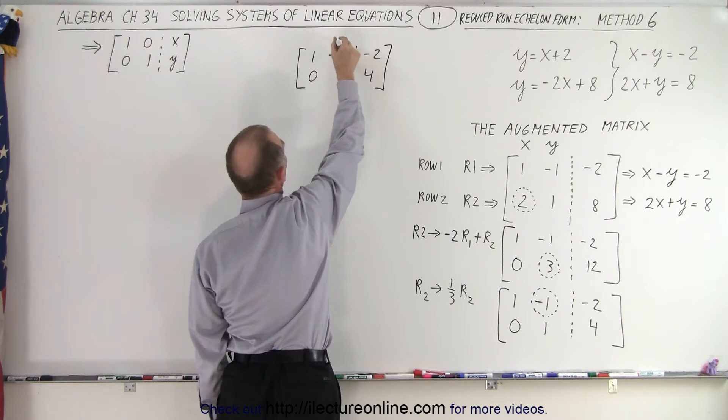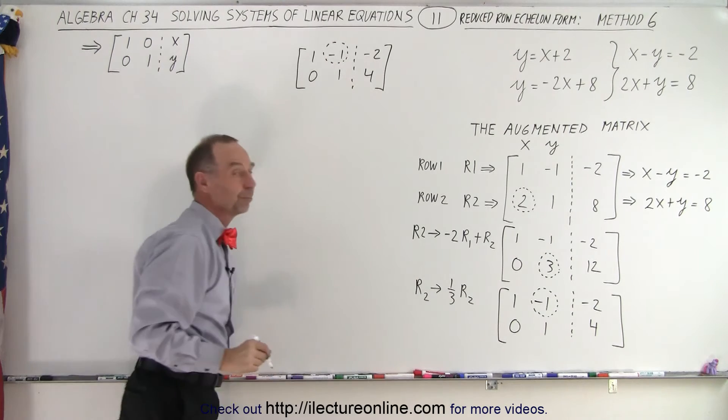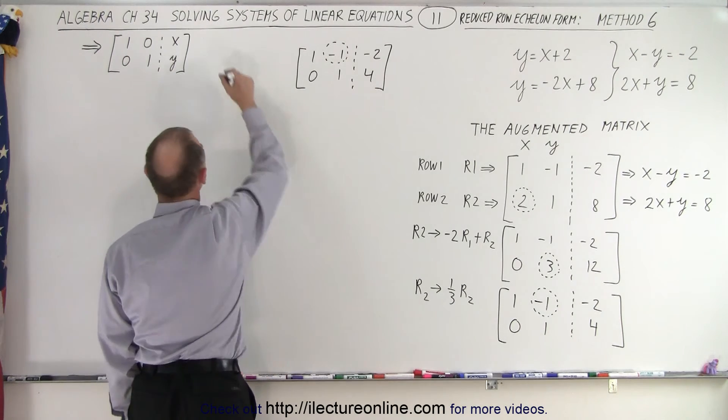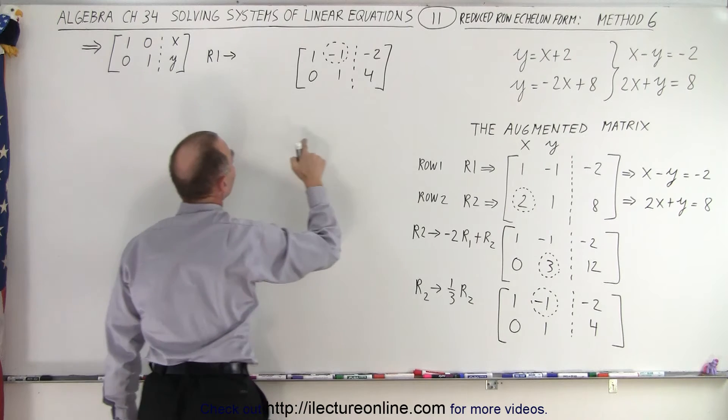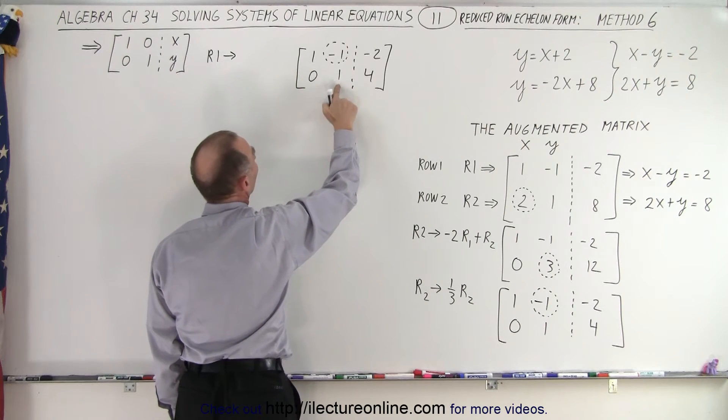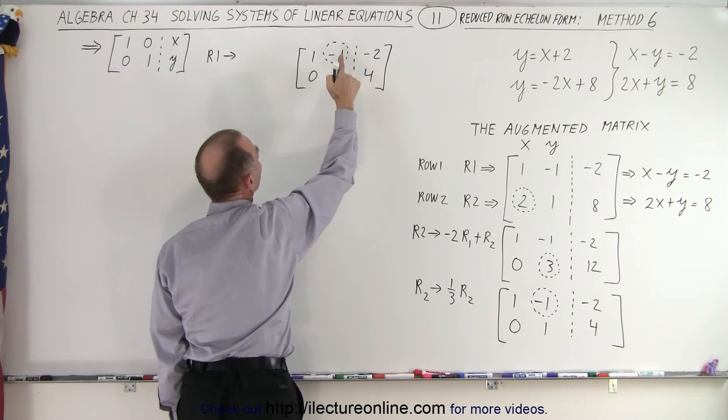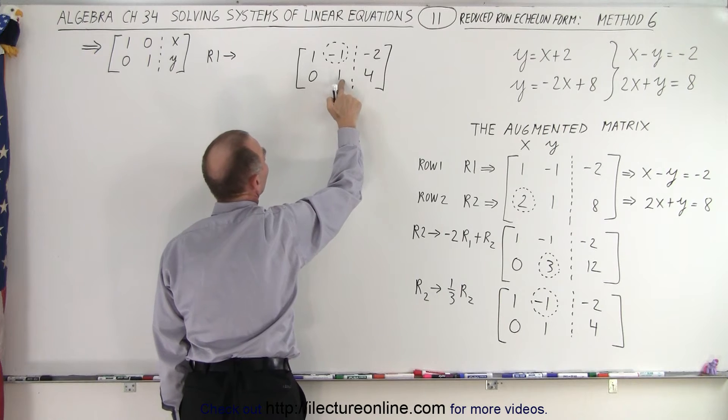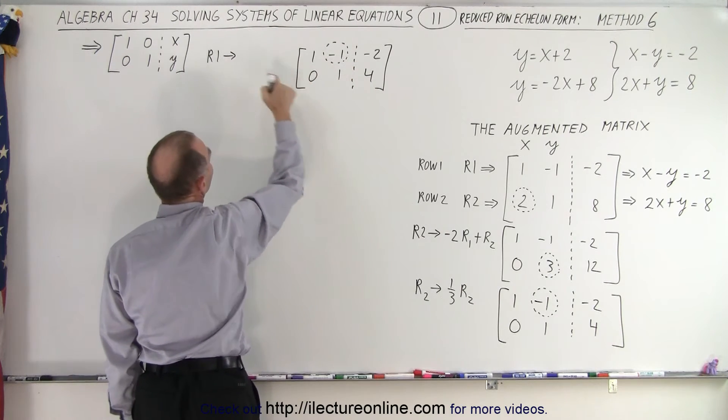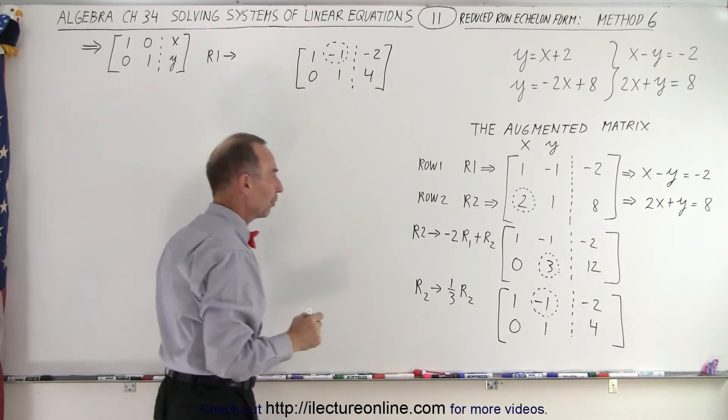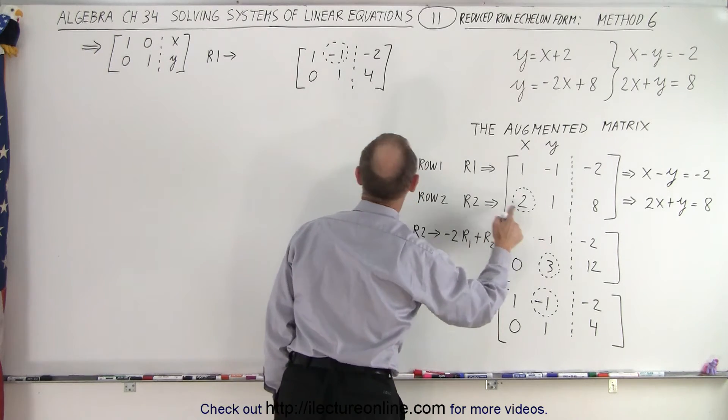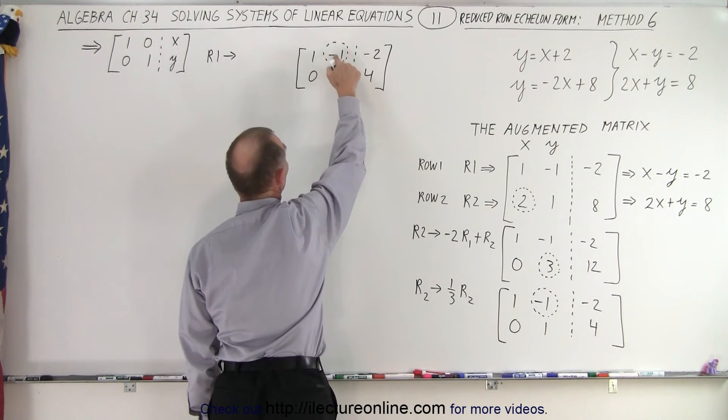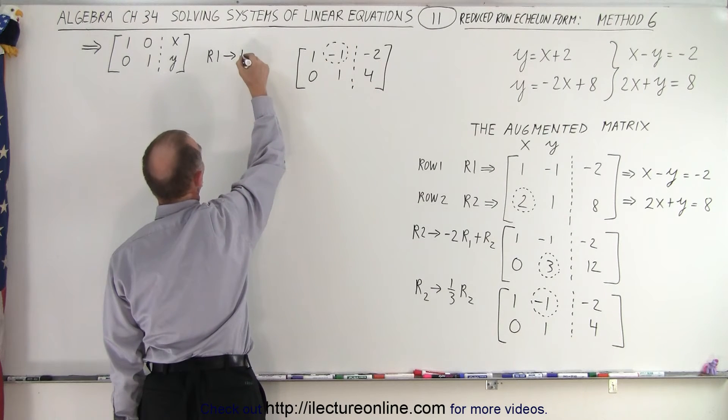Remember, I was trying to get rid of the negative 1. So I'm going to do as follows. I'm going to take row 1 and replace it by the negative of this number, multiply times this and add it to this. So the negative of the number I'm looking for. The negative of negative 1 is a positive 1.